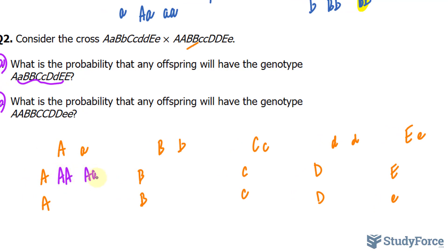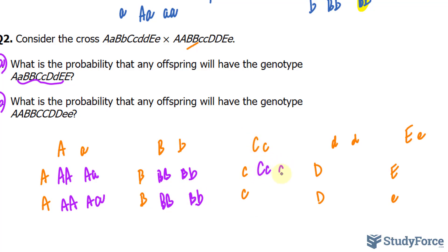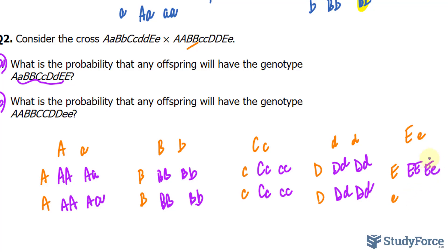Working through these crosses: for gene B we get capital B capital B, capital B little b, capital B capital B, and capital B little b. For gene C we get capital C little c and two little c's, giving capital C little c and little c little c. For gene D we get capital D little d, and the same pattern applies. For gene E we get capital E capital E, two heterozygous outcomes, and homozygous recessive. The offspring is heterozygous for the first gene.